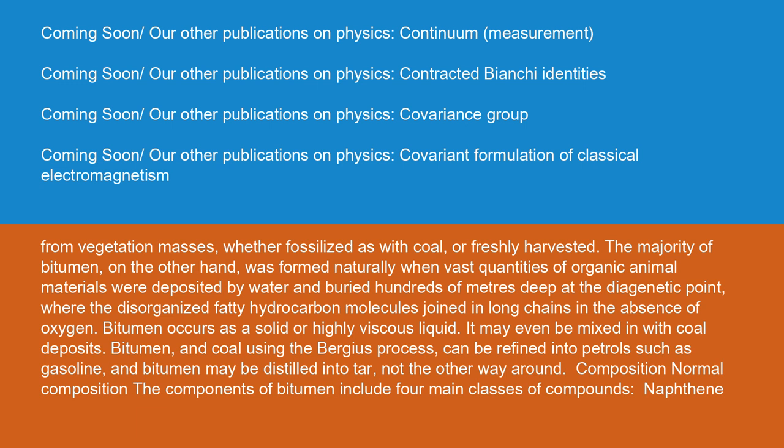The majority of bitumen, on the other hand, was formed naturally when vast quantities of organic animal materials were deposited by water and buried hundreds of meters deep at the diagenetic point, where the disorganized fatty hydrocarbon molecules joined in long chains in the absence of oxygen. Bitumen occurs as a solid or highly viscous liquid. It may even be mixed in with coal deposits. Bitumen and coal using the Bergius process can be refined into petrol such as gasoline, and bitumen may be distilled into tar — not the other way around.